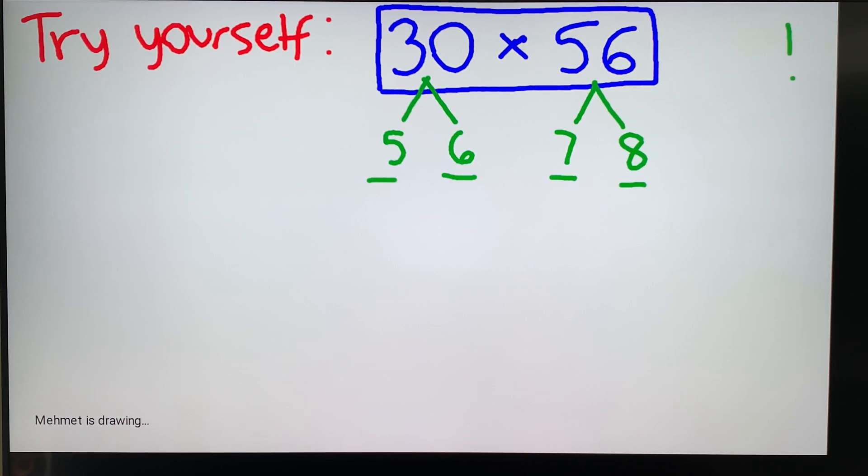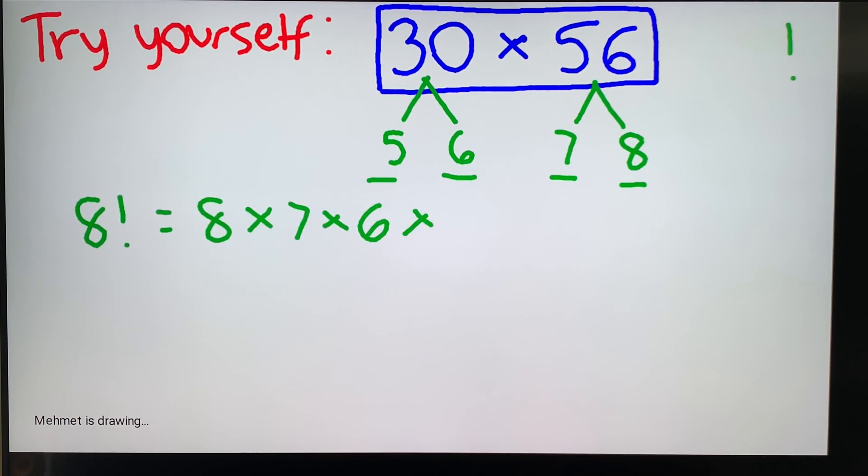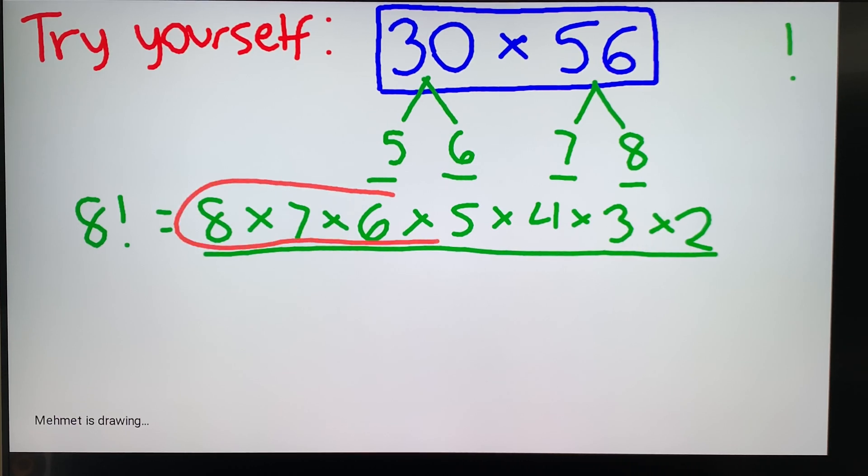So then we have 8 factorial is equal to 8 times 7 times 6 times 5 times 4 times 3 times 2. And we want to keep this part here, which is equal to our goal, and we do not want 4 times 3 times 2.